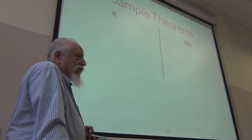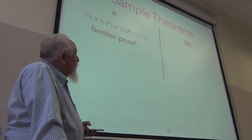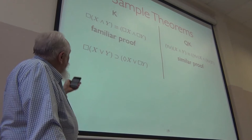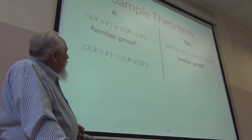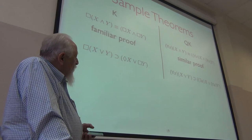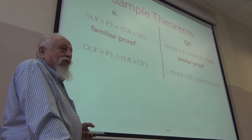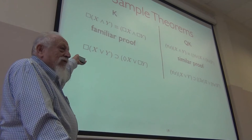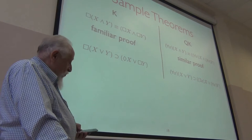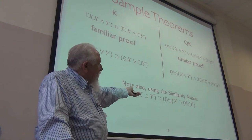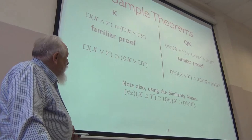Some sample theorems: in K, box distributes over AND; in QK, for-all distributes over AND. If you take any standard proof in K and replace the boxes by for-alls, you'll get a proof of that. Box doesn't distribute over OR, but box of (x or y) implies that either one is possible or the other is necessary. Similarly, for-all doesn't distribute over OR, but for-all x of a disjunction implies either one of them is existential or the other is universal. Using the similarity axiom, for-all distributing over implies also gives you instances with suitable freeness properties.